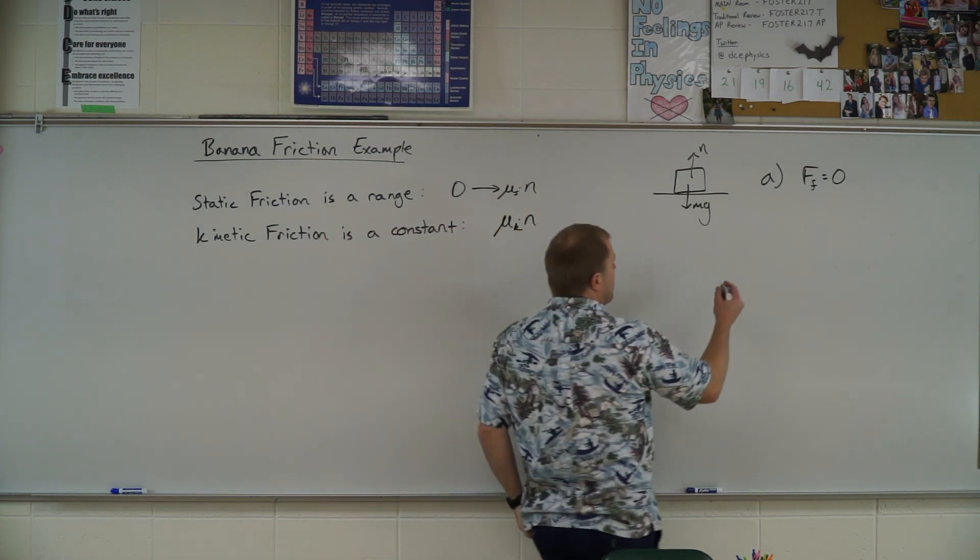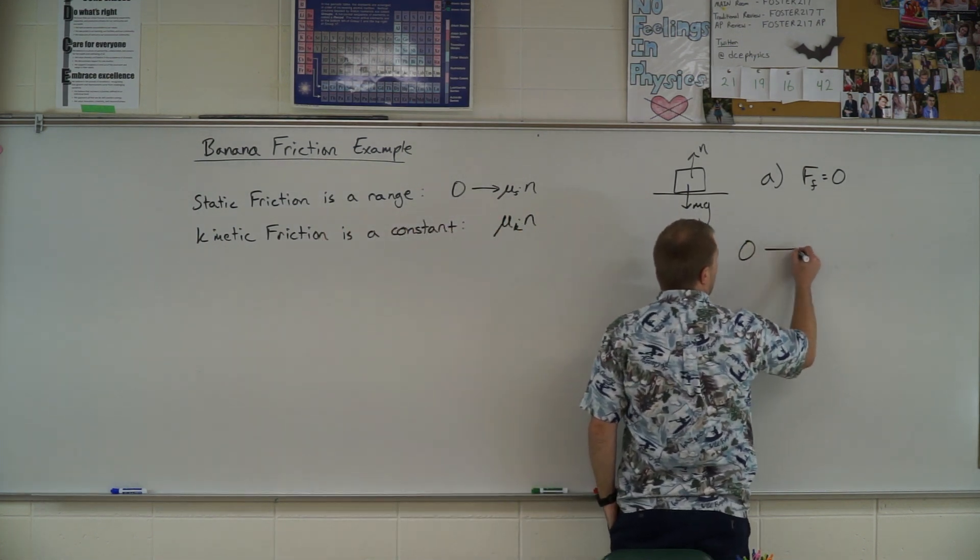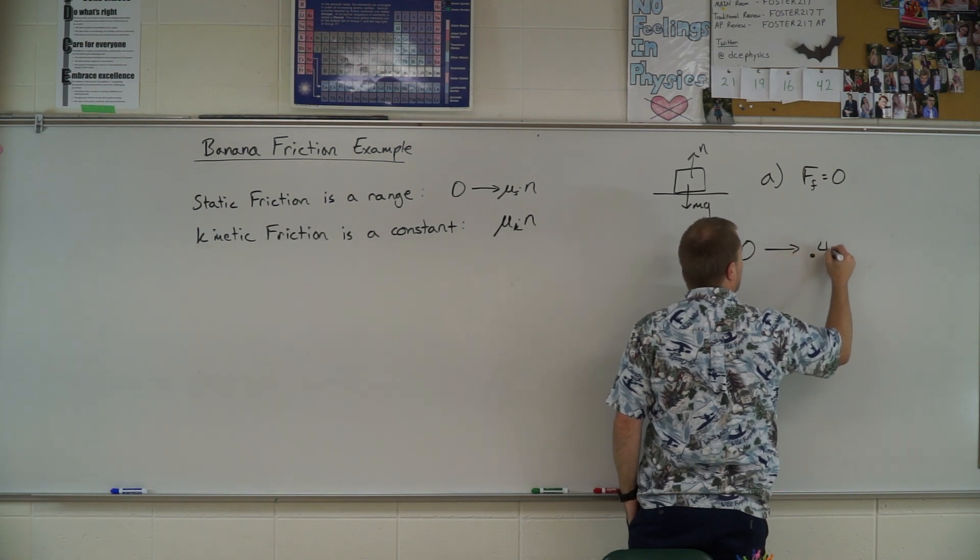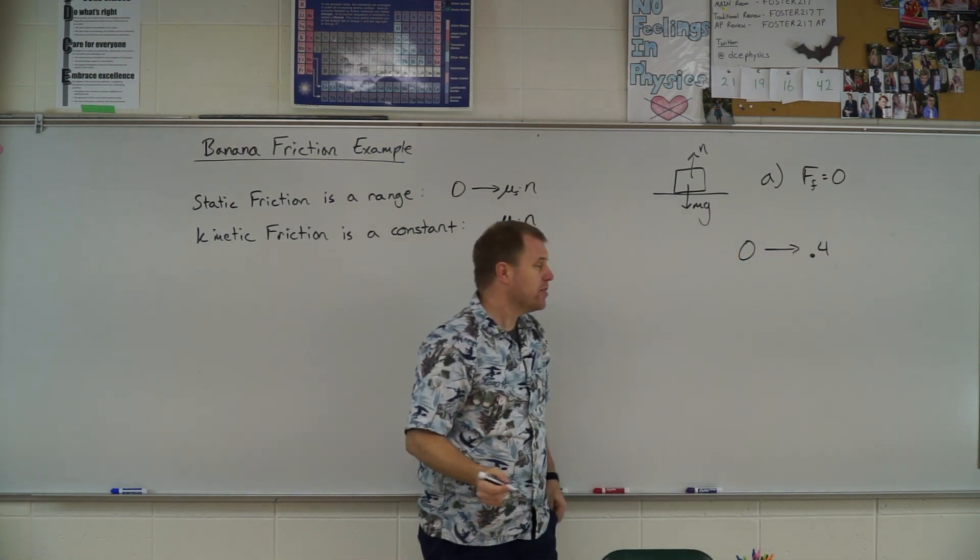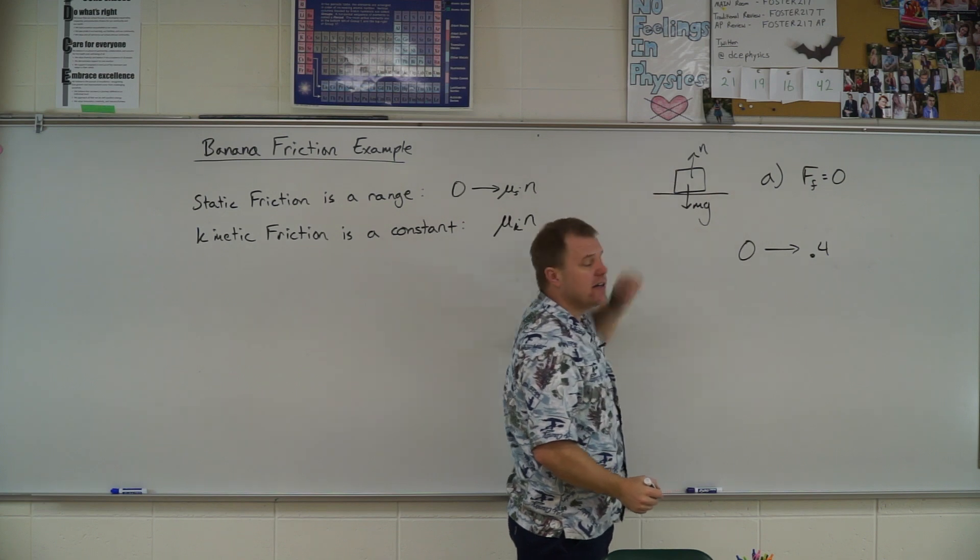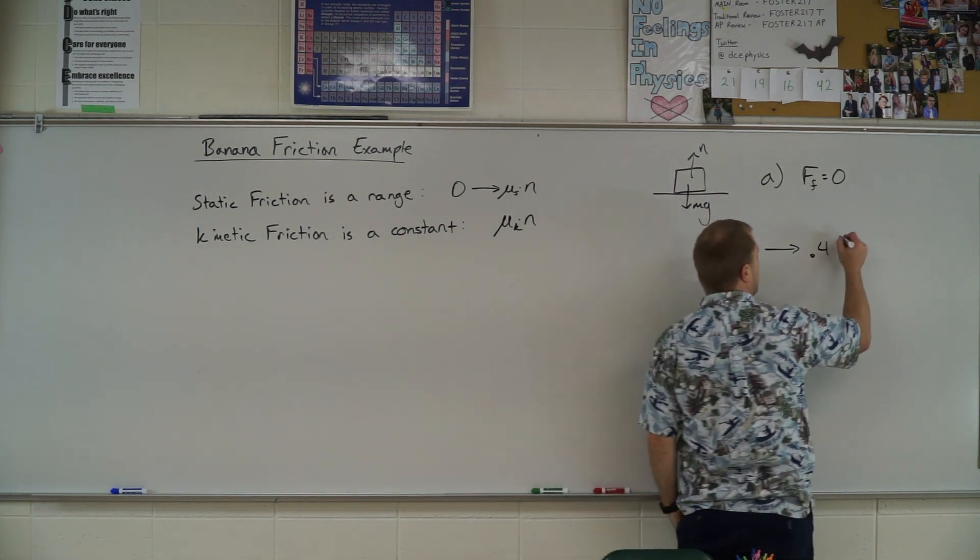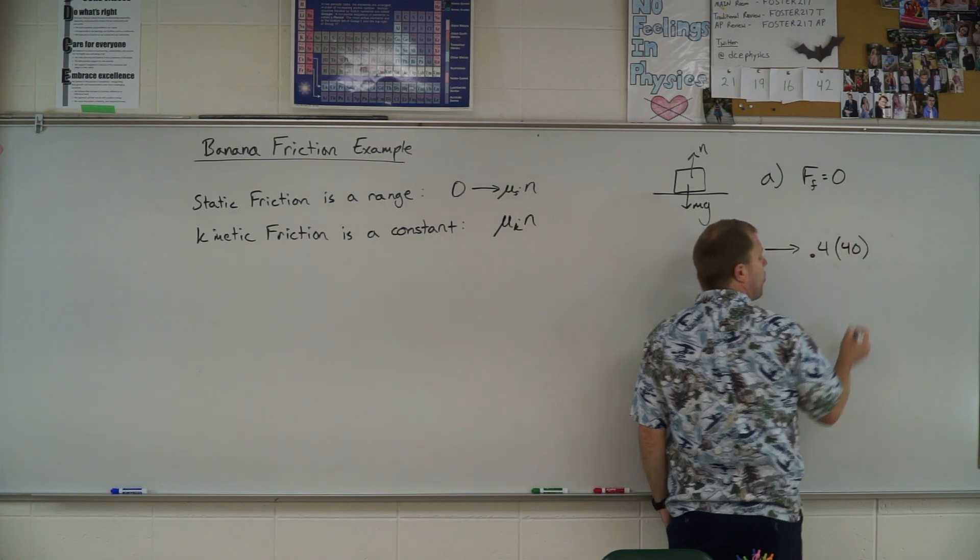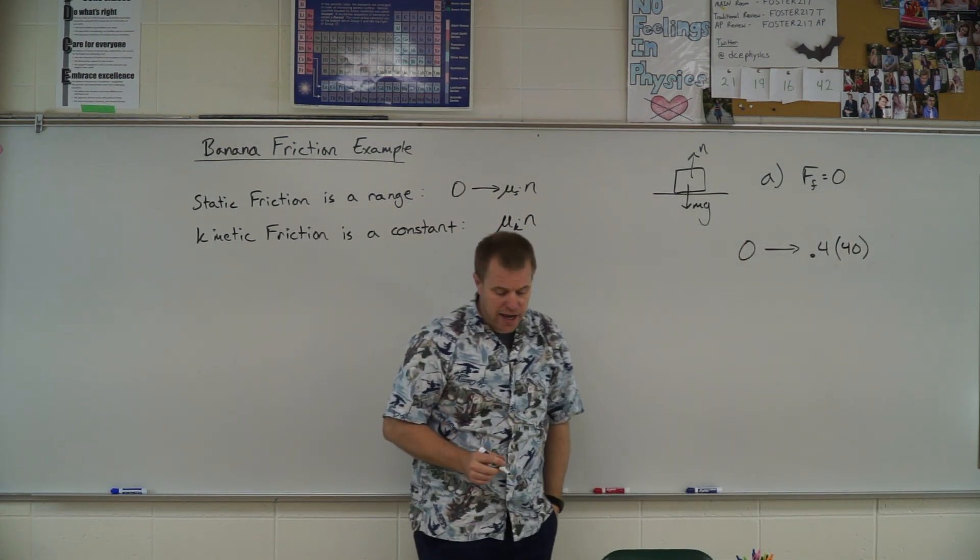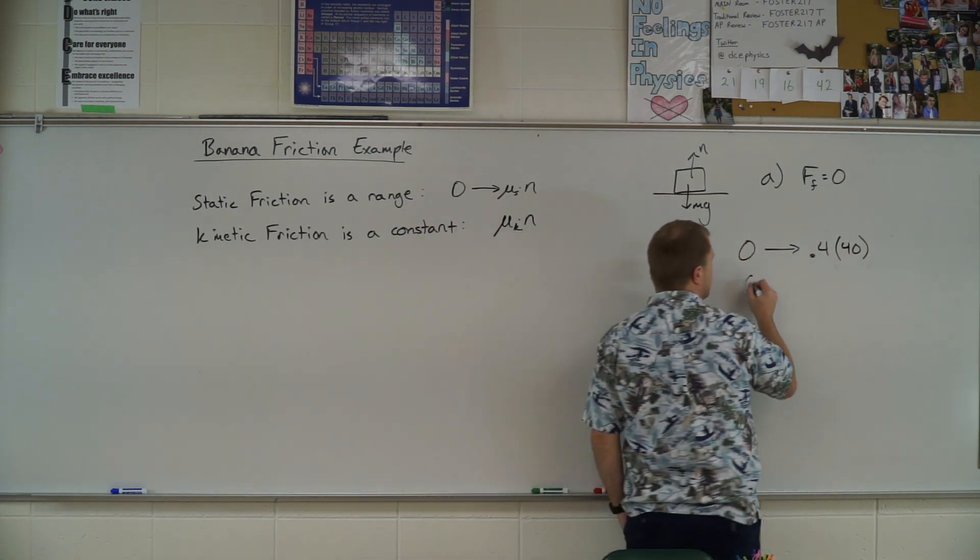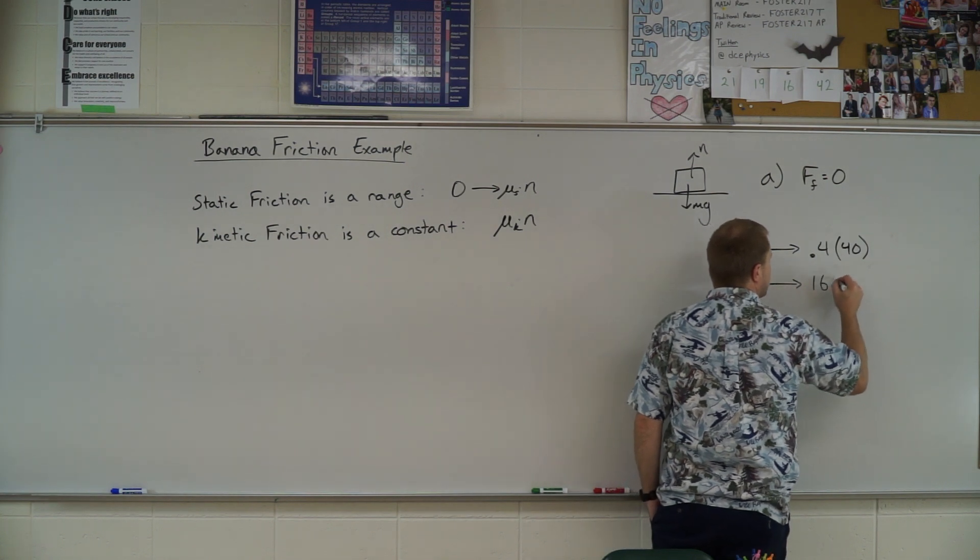Okay, so that range is going to be anywhere from 0 up to 0.4 times the normal force. Alright, looking at my free body diagram here, I see the normal force is equal to the weight and the weight was 40 newtons. And so, we have a range of 0 to 16 newtons.